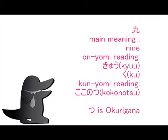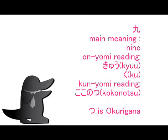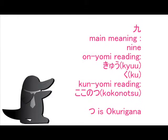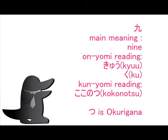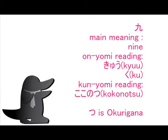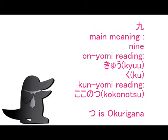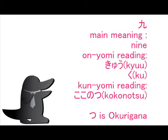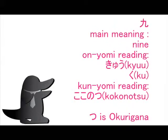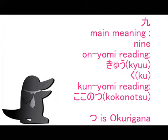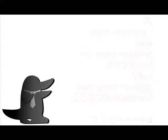In kun'yomi reading, you can read it as kokonotsu. The 'tsu' in kokonotsu is okurigana. In Japan, we studied this kanji in first grade at elementary school.